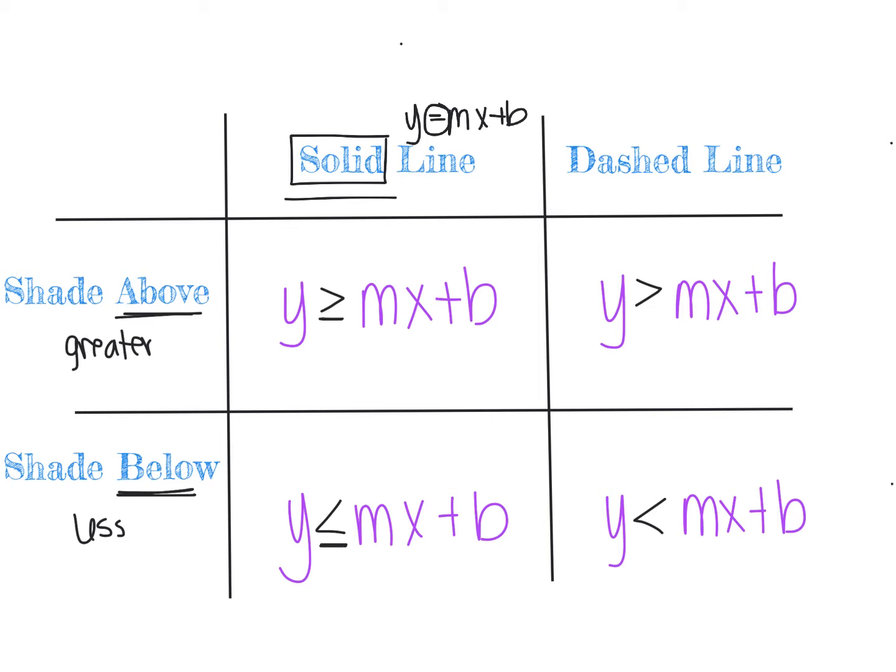A dashed line occurs when the inequality is strictly greater than or less than — not equal to. That dashed line acts as a boundary.